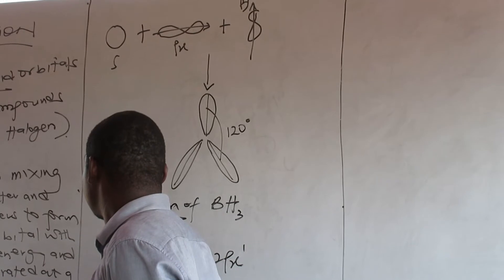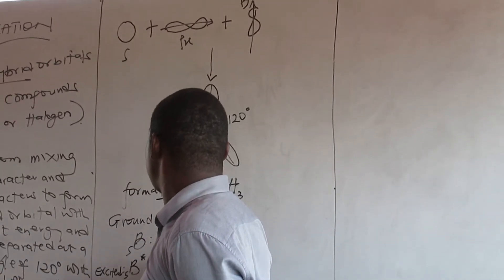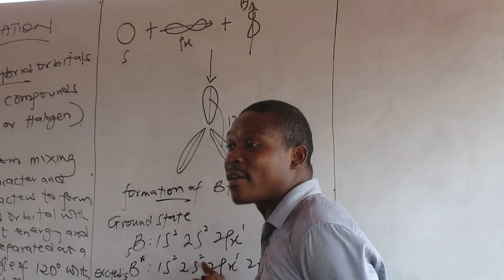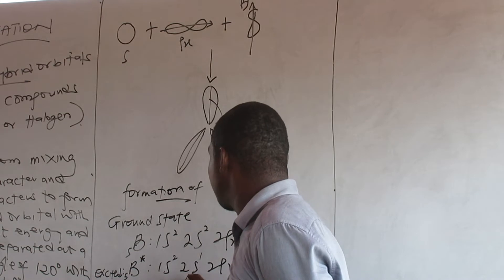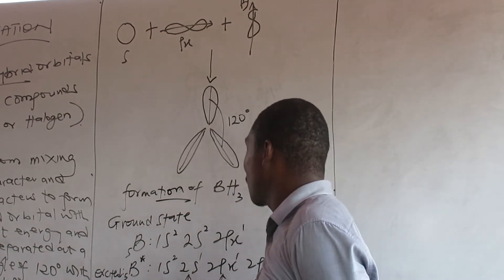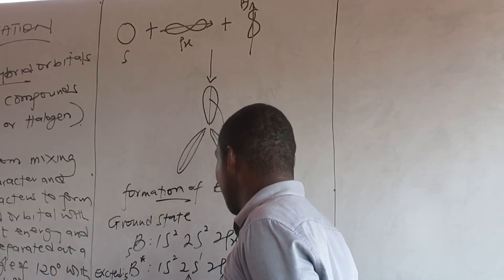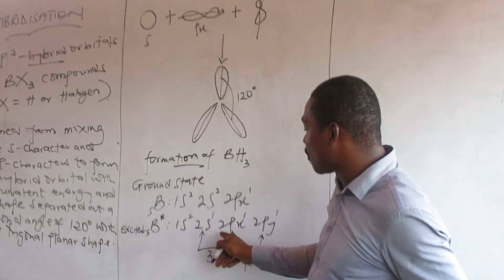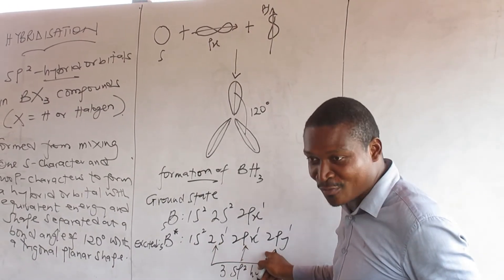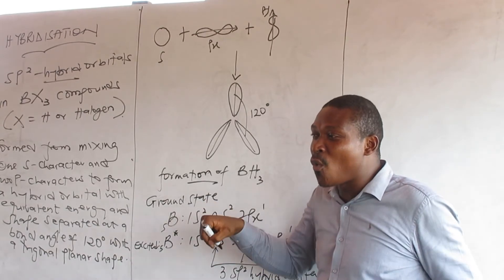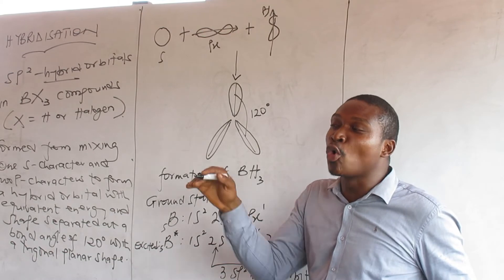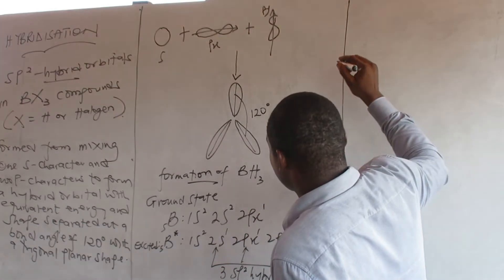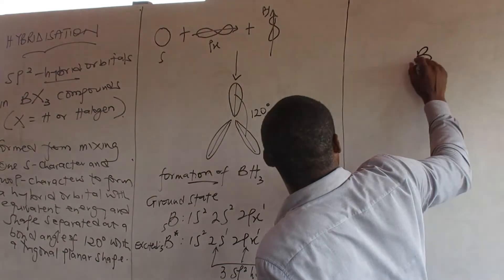Now let's go to the excited state for boron. In the excited state, boron has 1s, 2s, 2px, and 2py — because you excite one electron from the 2s into the empty orbital. Now this, together with this and that, will combine to form 3 sp2 hybrid orbitals. That is it. So when you excite, you can see what you have to combine to form that — that is why it is called sp2. When you excite and there is nowhere to put the excited electron, that will be the concept of a lone pair, which you get to with central atoms like nitrogen and oxygen.